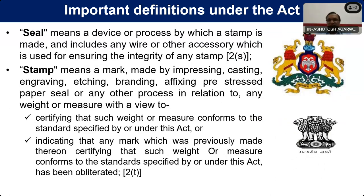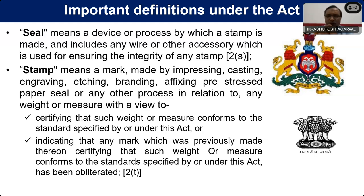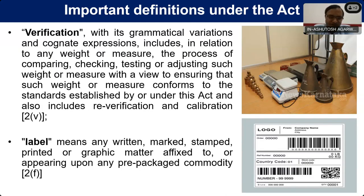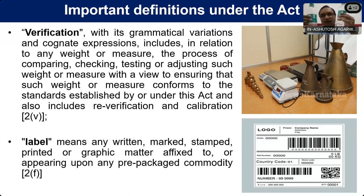Seal and stamp — whenever we find that the equipment is correct and complying with the provisions of the law, we put a seal, put a wire, and the government seal to certify it is correct. This stamp or seal certifies that the weight conforms to the standard specified under this Act. Verification is again very important — it is a legal term. Verification includes calibration: we compare a commodity, weight, measure, or equipment with a standard — comparing the under-test weight with a standard weight. That is called verification or calibration. Adjusting or repairing is called calibration.